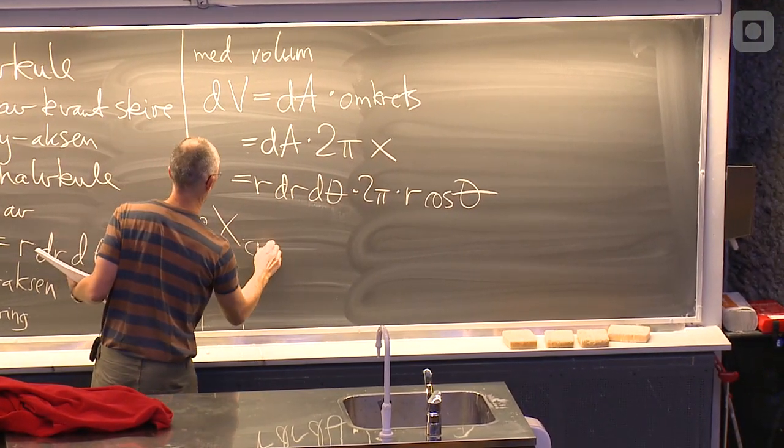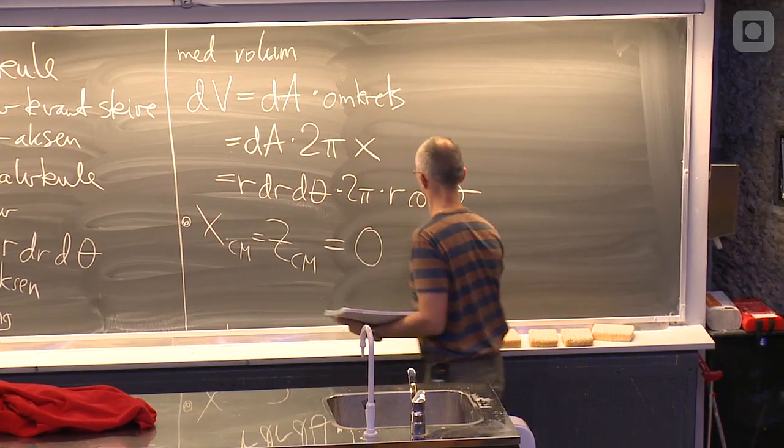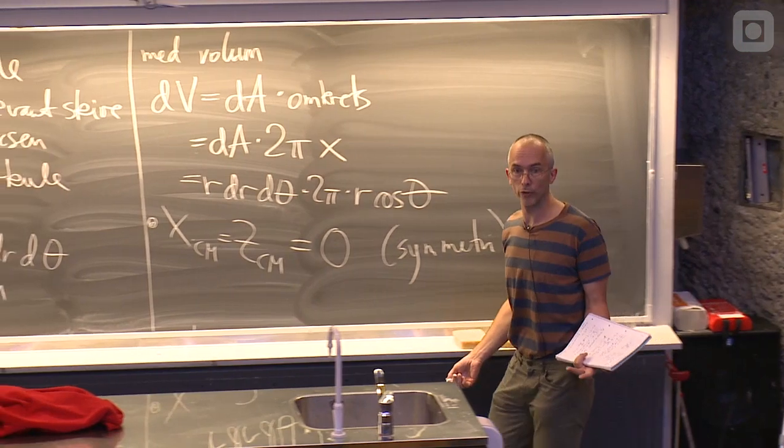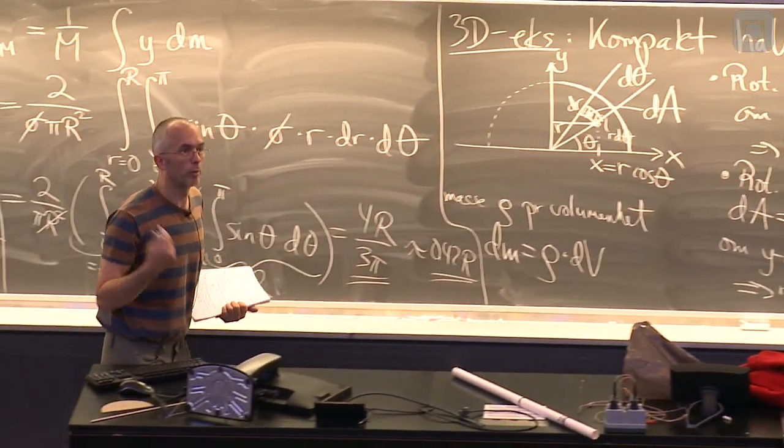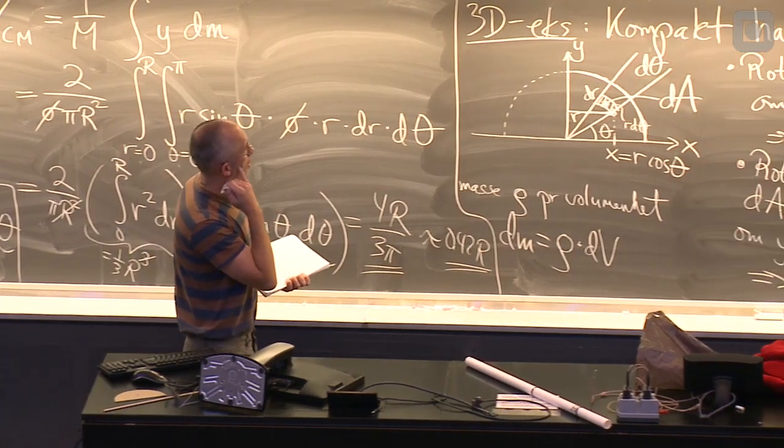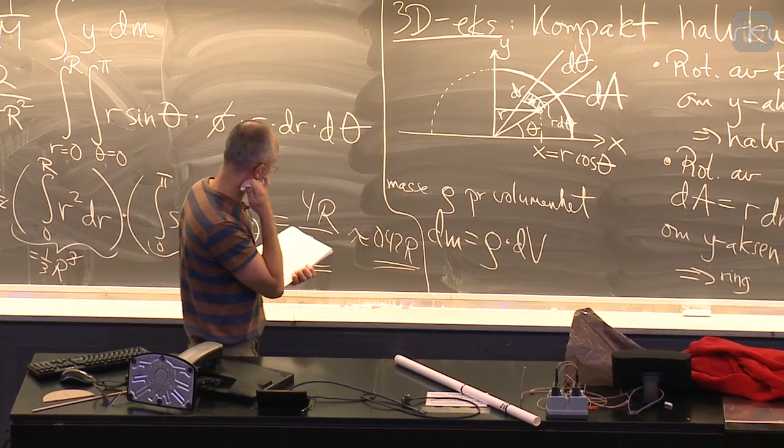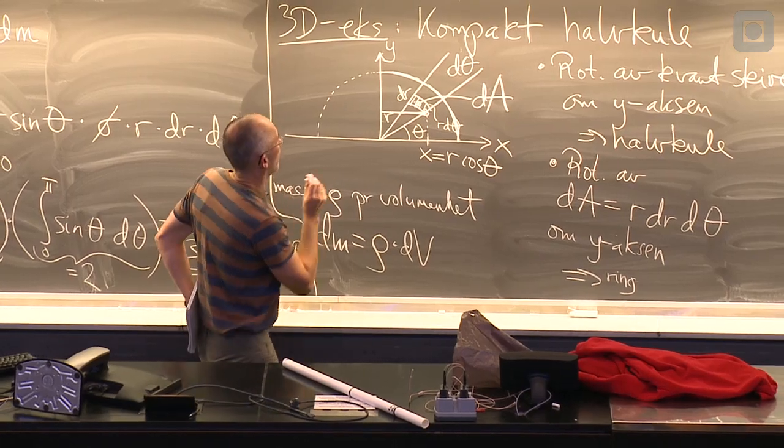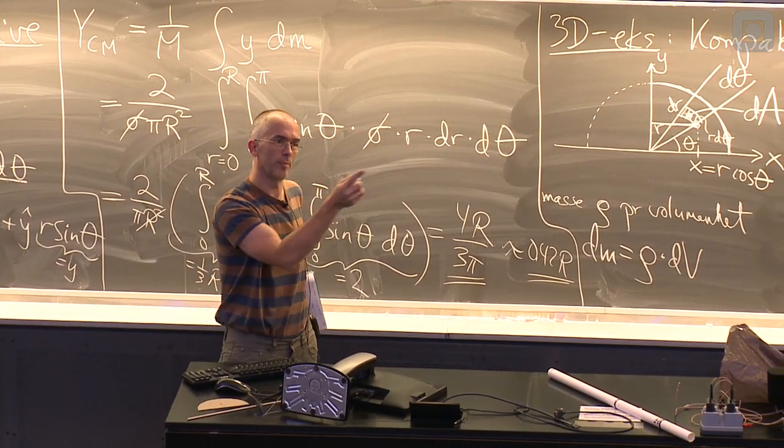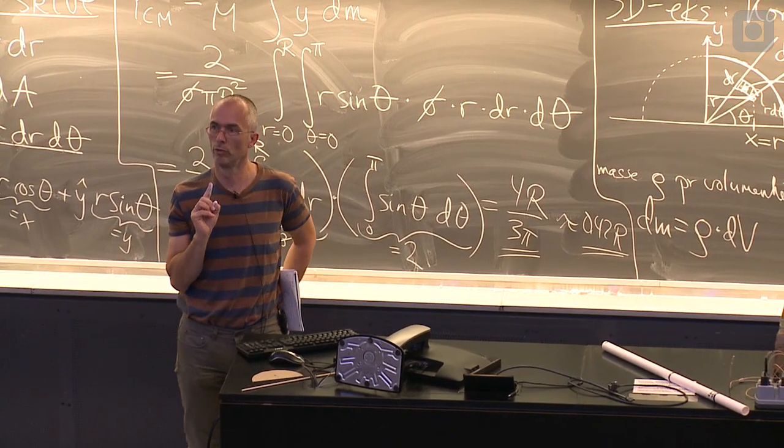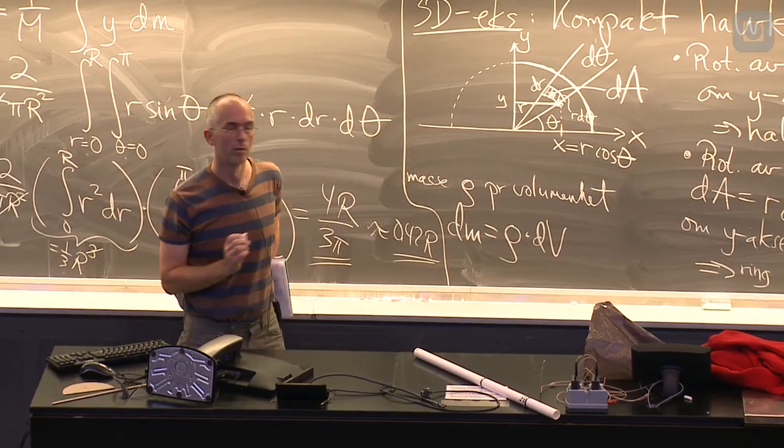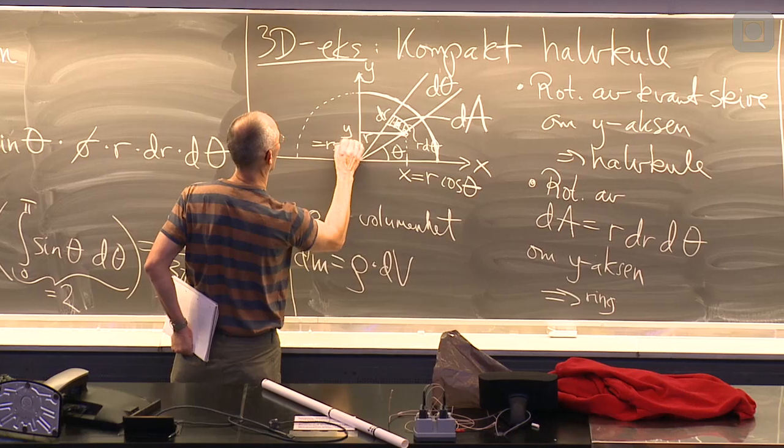Symmetri. Massesetteret må ligge på y-aksen. Rotasjonssymmetri omkring y-aksen. Da må den ligge der. Skal vi se. Ja. Vi ser at den ringen, som jeg har fått ved å rotere det flateelementet omkring y-aksen. Alle deler av den ringen er i samme y-posisjon. Der. Tar den her og roterer omkring, så endrer ikke y seg. Og den kan jeg lese av fra figuren. Samme som før. R sinθ.